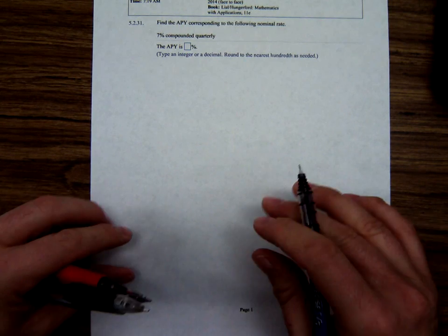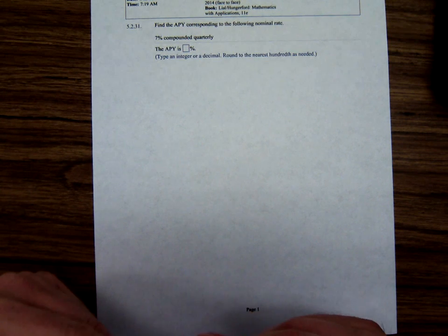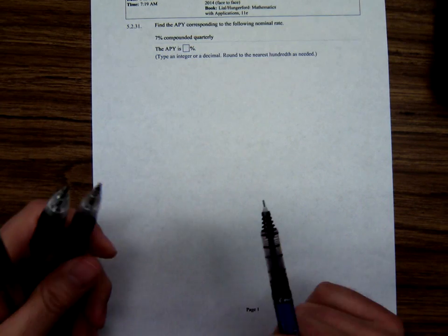So here we are again, Anthony Versala doing some business math. It says find the APY corresponding to the following nominal rate, and we're told 7% compounded quarterly.